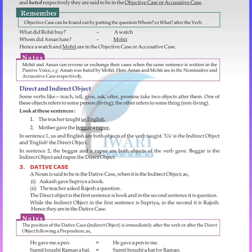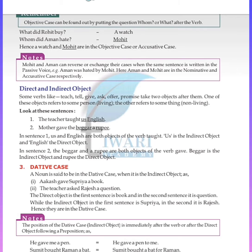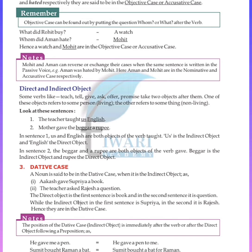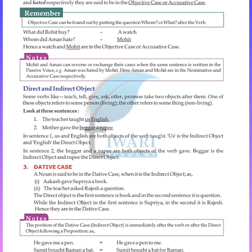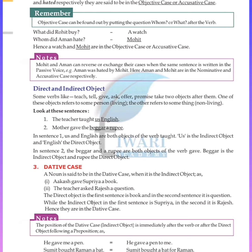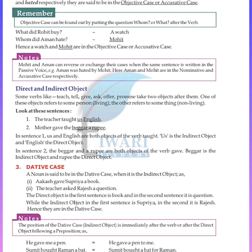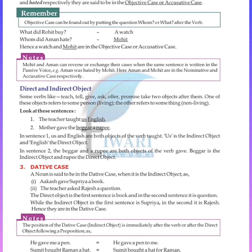Now, the dative case: a noun is said to be in the dative case when it is an indirect object. For example: Akaaz gave Supriya a book. The teacher asked Rajesh a question. Here, the direct object in the first sentence is a book, and in the second it is a question. The indirect object in the first sentence is Supriya, and in the second it is Rajesh. They are in the dative case.